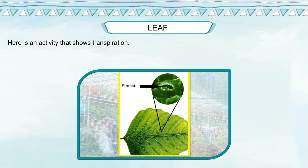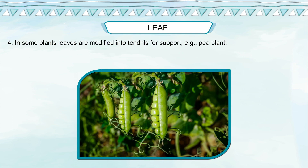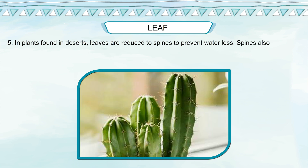Here is an activity that shows transpiration. In some plants, leaves are modified into tendrils for support — for example, the pea plant. In plants found in deserts, leaves are reduced to spines to prevent water loss. Spines also discourage animals from eating the plant.